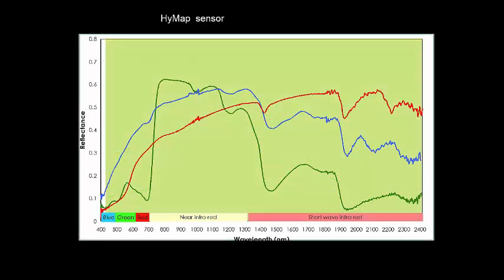If we then look at a hyperspectral sensor, you can see that it's collecting information over the entire spectra. This is a HyMap sensor, and we're getting 128 bands. We're getting a lot more detail about what's happening across that whole spectral range.